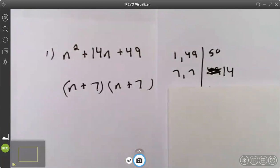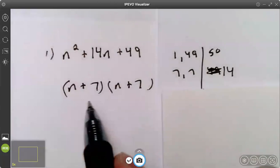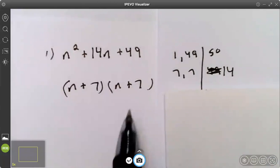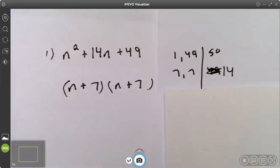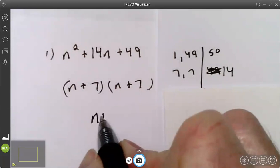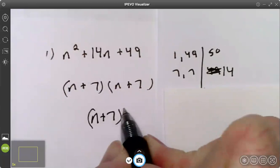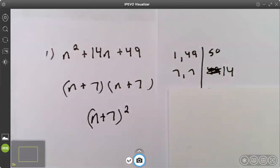What I needed to point out is this. If these match, n plus seven times n plus seven, then that is not simplest form. This is simplest form: n plus seven squared.